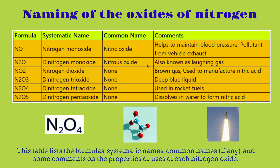For N2O3 — since N has a 2, it means dinitrogen, and O has a 3, so it's trioxide — the systematic name is dinitrogen trioxide. There is no common name, and it is a deep blue liquid. For N2O4, N2 means dinitrogen and O4 means tetra, so the systematic name is dinitrogen tetraoxide. There is no common name, and it is usually used in rocket fuels. For N2O5, the systematic name is dinitrogen pentaoxide. There is no common name, and it usually dissolves in water to form nitric acid.